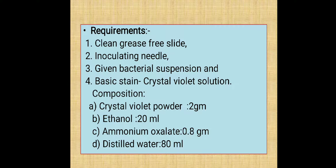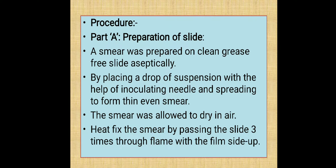The crystal violet solution can be prepared as follows: take ethanol 20 ml and add crystal violet powder 2 g and ammonium oxalate 0.8 g. Mix fully, then add distilled water to make the total volume 100 ml.